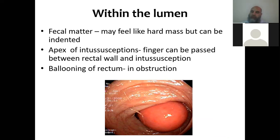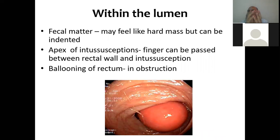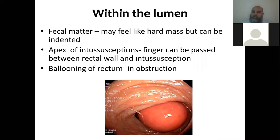Ballooning of the rectum: normally when you put your finger inside you feel the wall gripping it. In ballooning, you put the finger inside and feel nothing; when you bend the finger you then find the wall — meaning the rectum has become like a balloon and its tone has decreased. This usually occurs in intestinal obstruction, particularly malignant obstruction, due to neurogenic imbalance between sympathetics and parasympathetics induced by obstruction.